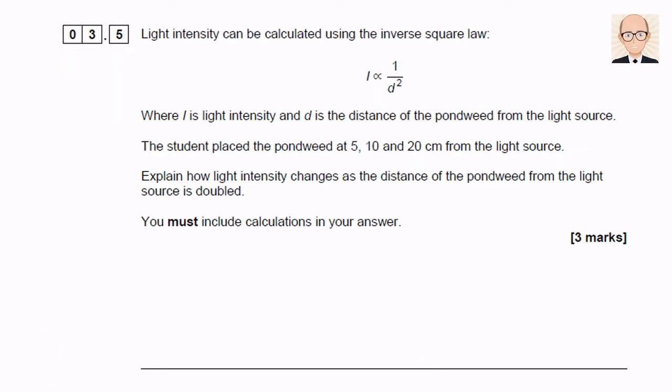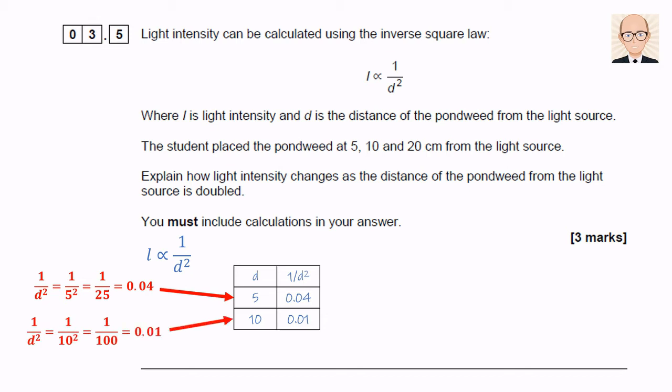The next question talks about the inverse square law to describe how light intensity depends on the inverse square of the distance from the light source. We have to explain how the light intensity changes as the distance of the pondweed from the light source is doubled, and we have to include some calculations. If we take the statement that light intensity L is proportional to 1 over d squared, we can see what happens when we double the distance from 5 cm to 10 cm by substituting the distance values into the equation. So when d is 5, d squared becomes 25, and 1 divided by 25 is 0.04. But when d is 10, d squared becomes 100, and 1 divided by 100 is 0.01.